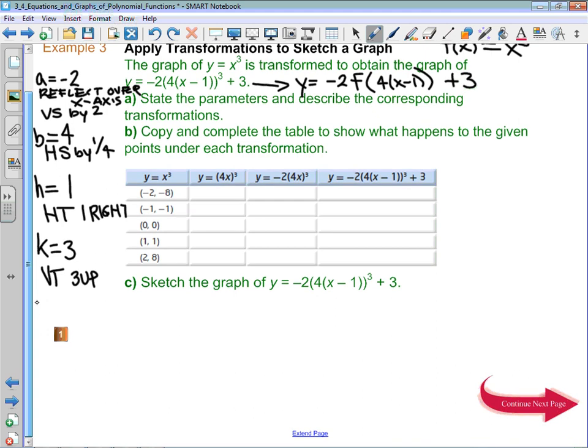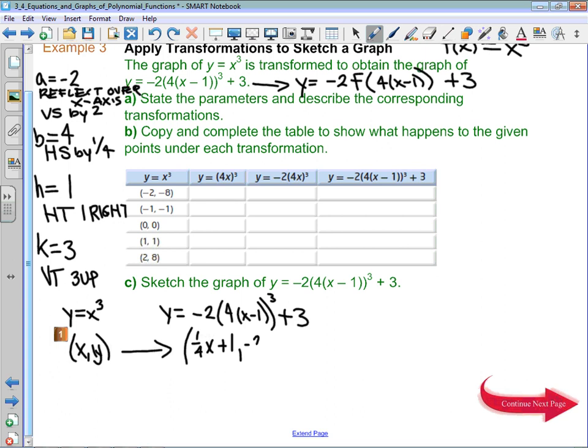I am a big fan of the mapping. So if we think about this, if we look at Y equals X cubed, which has coordinates X, Y, they are going to turn into, and that's going to be on the graph of Y equals negative 2 times 4 times X minus 1 all cubed plus 3. What's going to happen is we can use our A, B, H, and K parameters and say that this would turn into 1 fourth X. We're going 1 to the right, so I would add 1, comma, negative 2Y. We're going 3 up, so I would add 3.